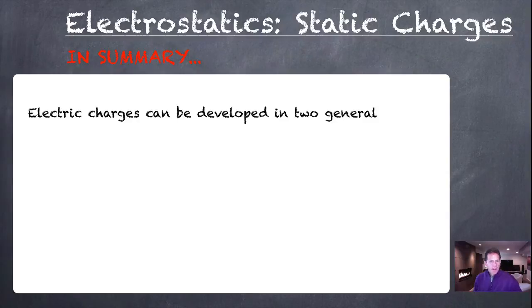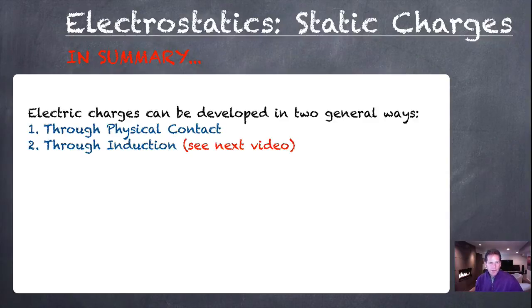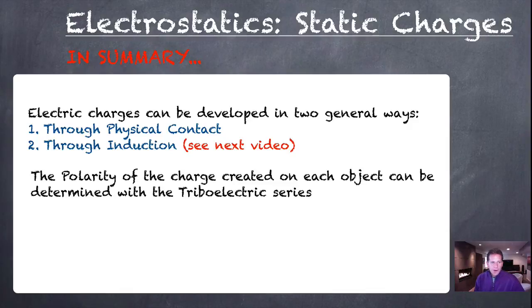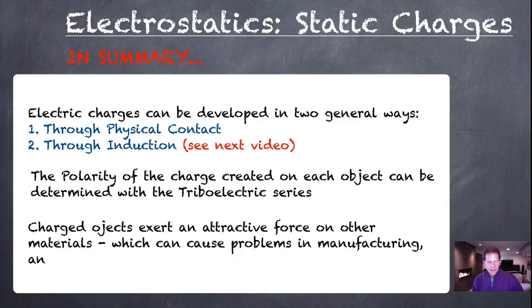So, in summary, electric charges can be developed in two ways, through physical contact or through a process called induction. The polarity of the charge created in each object can be determined with the triboelectric series, so you just have to look at the two substances involved, whether it's physical contact or induction, but you'll be able to determine which one has a positive and which one has a negative charge. And finally, charged objects will exert an attractive force on other materials, can cause problems in manufacturing, have safety concerns, etc. And so the video with the two pieces of tape that you saw would be a good illustration of that.